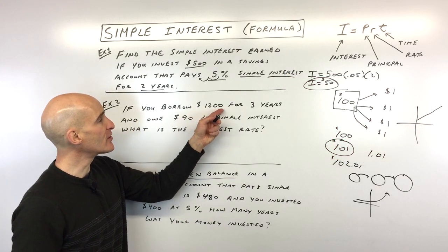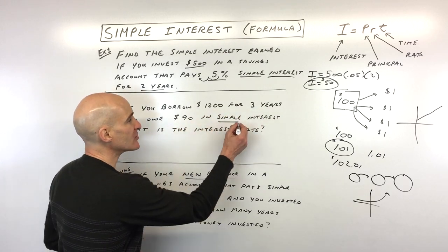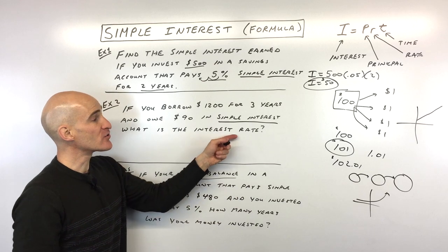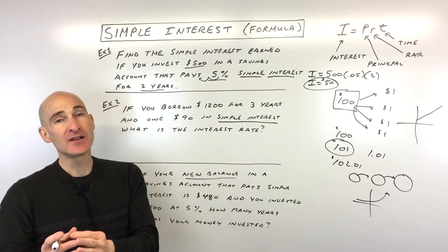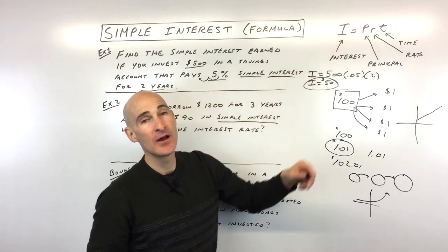It says, if you borrow $1,200 for three years and you owe $90 in simple interest, what is the interest rate? This problem is a little bit different in that we're not solving for I, we're solving for R.